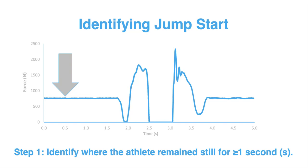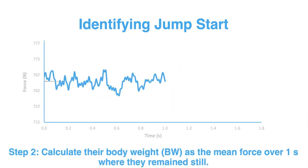The athlete has started to move because you see a reduction in force that we call the unweighting phase. I'll explain the different phases of the countermovement jump in a later video. The important thing is — as I've mentioned in previous videos — identify where the athlete remains still and make sure they've done that for at least one second.